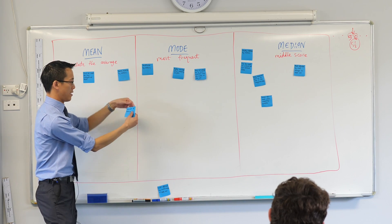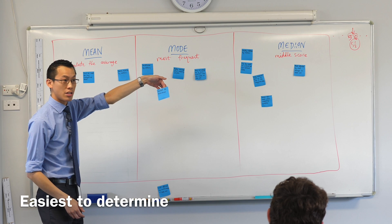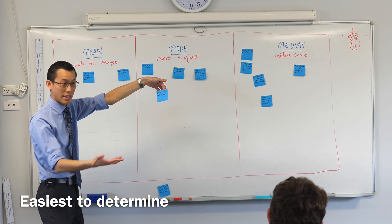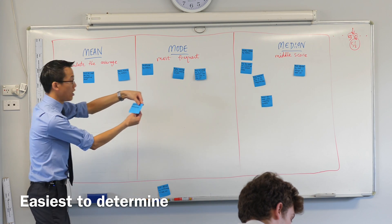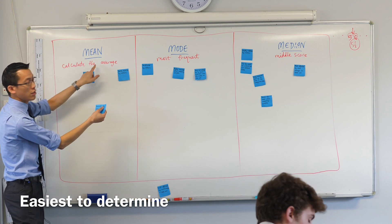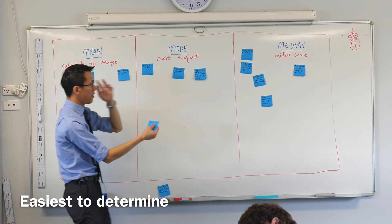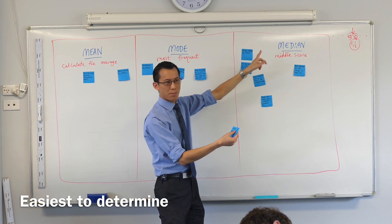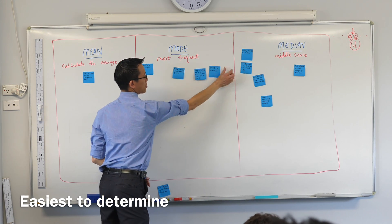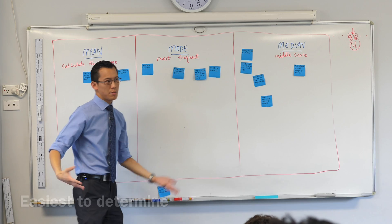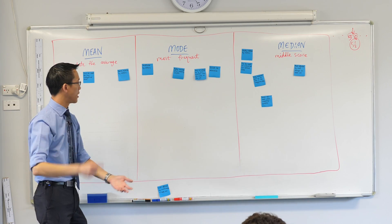This one should be uncontroversial: easiest to determine. Do we think the mode's easiest to determine? Yeah, sure. You've got to do your addition and division for the mean. For the median you've got to do your business about counting along. But for the mode you kind of just count them up — whichever the most are, you're there.